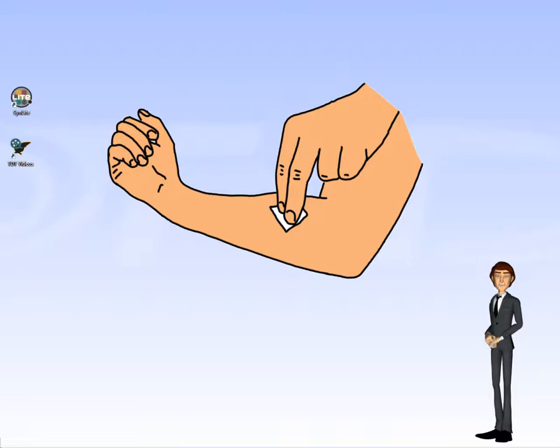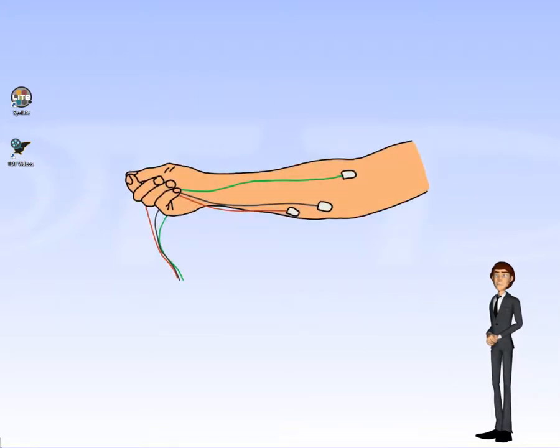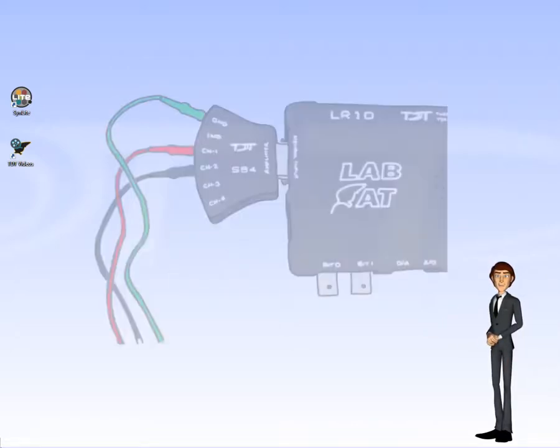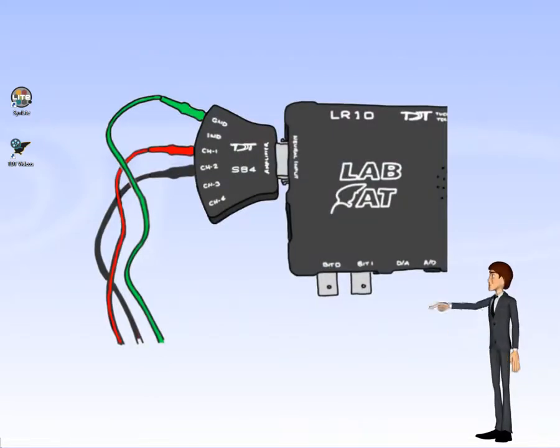Using the alcohol pad, scrub the skin aggressively where you intend to place the electrodes. Rub until the skin is red to remove oils and the dry top layer of skin. Now, stick the electrodes on like this. Red and black will be our signal and reference. The green is our ground. Connect the electrodes into the SB4 like this, and connect the SB4 to the LabRat's neural input.